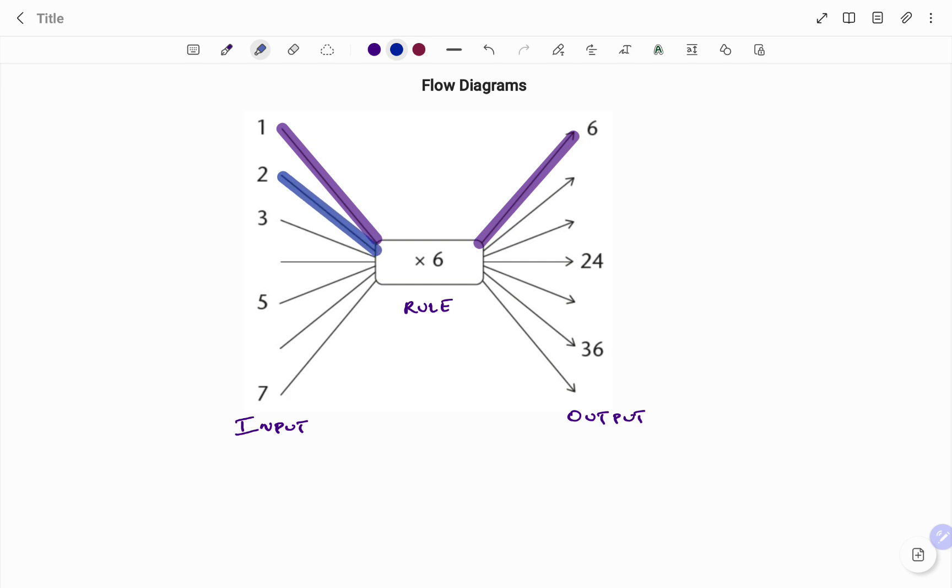The rule says multiply by six, so we have two times six which is twelve. That will give you the output of twelve. Now when you get to the third example we have three going in as shown.